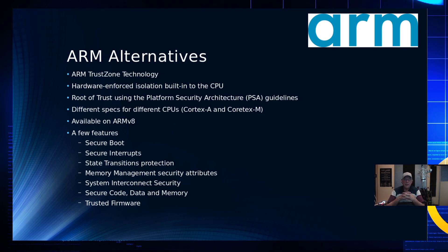What about ARM? ARM has their TrustZone technology — hardware-enforced isolation built into the CPU. It's a root of trust also built on the Platform Security Architecture, or PSA guidelines. They offer different specs for the Cortex-A and Cortex-M line of processors, because they function differently. It's currently available on ARM version 8. ARM is proprietary, so while they publish specifications, they don't share their code unless you license it from them. New features include secure boot, secure interrupts, secure states, state transition protection, and memory management security attributes.